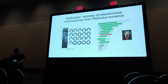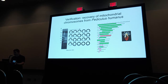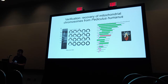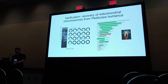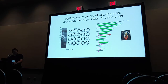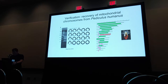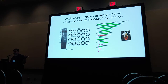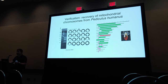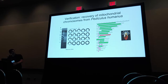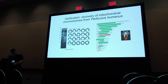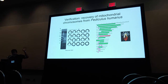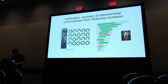To verify this method, we applied these approaches to the human louse using Illumina data. This species is known to have mitochondrial mini-circles confirmed with PCR and Southern blots. We were able to recover those fragments using our approaches, and they were very similar to the published sequences, giving us confidence that we were getting what we were looking for moving forward.